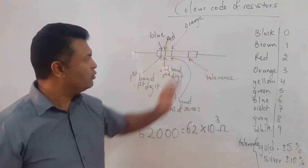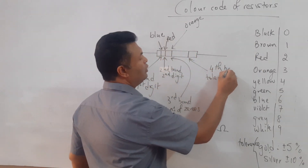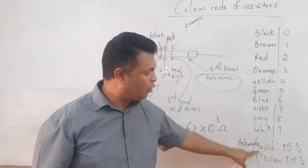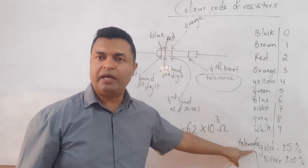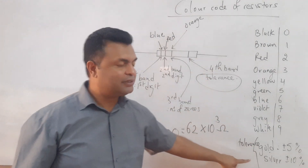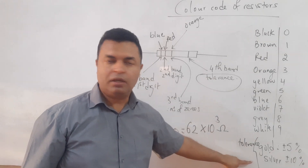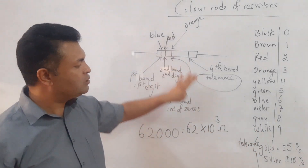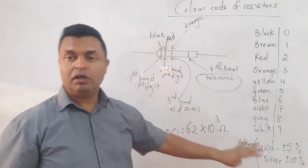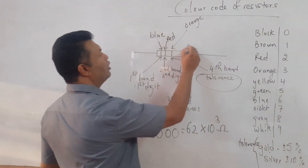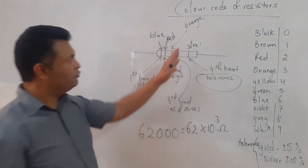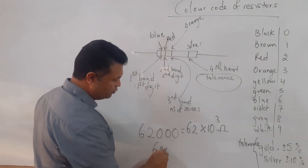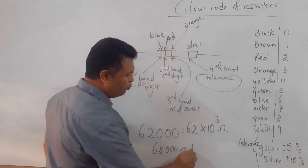The fourth band gives the tolerance level. If the color is gold, the tolerance is plus or minus 5%. If the color is silver, it is plus or minus 10%. These values will be provided in the question. Let's say the fourth band is silver, so the resistance is 62,000 ohms plus or minus 10%.